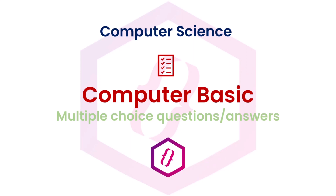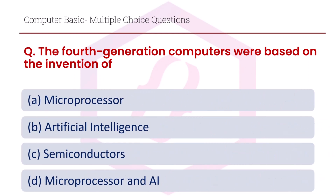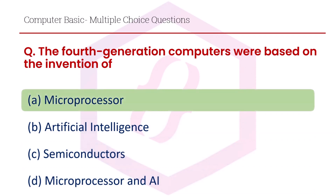Hello students, welcome to another episode of computer basic multiple choice question answer session. In this episode we are going to see some important questions on the topic of computer basics. Let's start. The fourth generation computers were based on the invention of: option A microprocessor, option B artificially intelligent, option C semiconductors, option D microprocessor and AI. The right answer is option A, microprocessor.